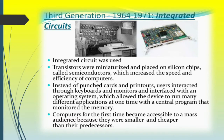Here are a few characteristics that the third generation of computers hold. They used integrated circuits, and transistors were miniaturized and placed on silicon chips known as semiconductors. This increased the speed and efficiency of computers. Instead of punched cards and printouts, users interacted through keyboards and monitors, interfacing with an operating system which allowed the device to run many different applications at one time with a central program monitoring the memory. Computers for the first time became accessible to a mass audience because they were smaller and cheaper than their predecessors.